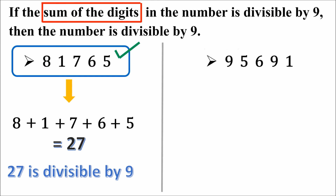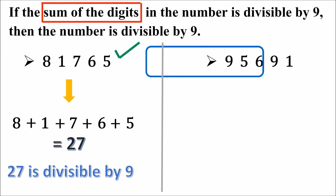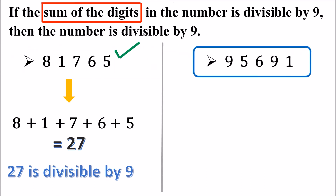Is this number divisible by 9? To know whether this number is divisible by 9 or not, we need to find out the sum of all the digits. The digits are 9, 5, 6, 9, and 1. Let us add all the digits.